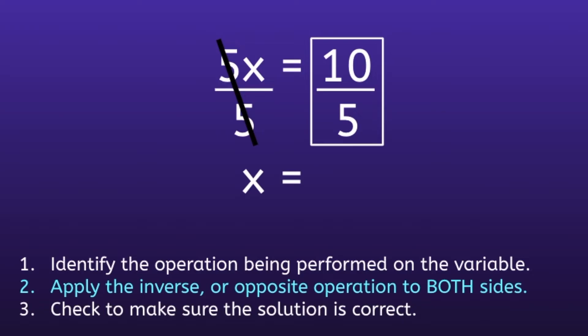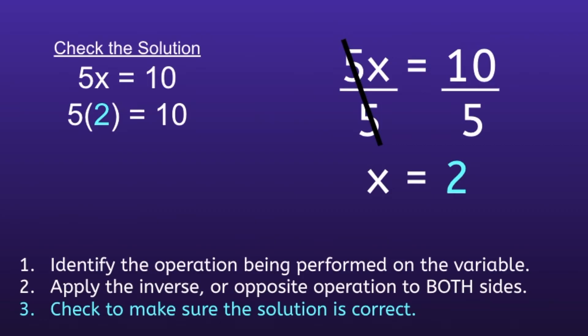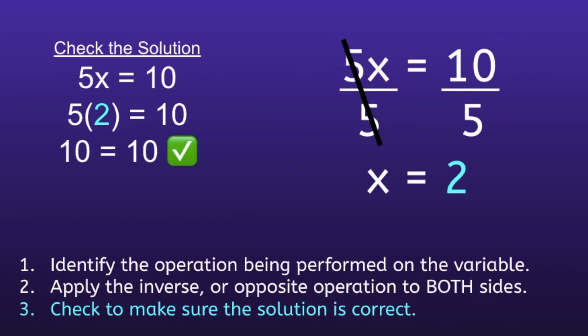On the right side, 10 divided by 5 is equal to 2. This moves us to Step 3: check to make sure the solution is correct. We rewrite the equation — 5x equals 10 — then substitute 2 for x, giving us 5 times 2 equals 10. Since 10 equals 10 and both sides are equal, the solution is correct. x equals 2.